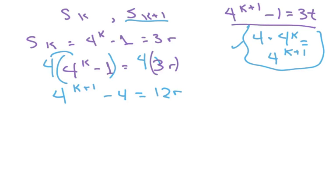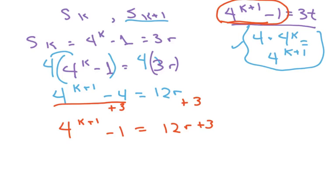Now, what I want to do is I want this side here to look like this. So what I'm going to do is just add 3 to both sides. And you're going to get 4 to the k plus 1 minus 1, which is what we wanted, equals 12r plus 3. So 4 to the k plus 1 minus 1 equals, I'm going to factor out a 3, to get 3 times 4r plus 1.